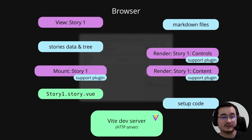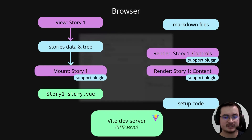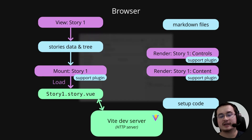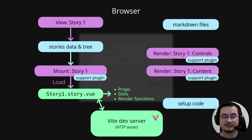So what happens when we want to display a story? First, we look at the virtual module we loaded and find a dynamic import to the Vue component, which is the story file. We use a mount component for this, which loads the story file using the Vite development server. We can extract information about it, such as the props — like the icon, the icon color, or other settings put on the story props — and also the slots and other render functions. Those are used to render the story.